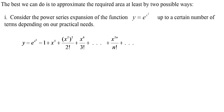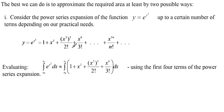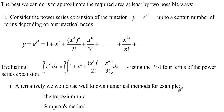Since we cannot determine the area analytically, we must have an alternative way. In our earlier module we resorted to approximating that area using two possible approaches. One is considering the power series of the function, then approximating the integral by evaluating a truncated series — say the first four terms — and integrating term by term using the power rule. The other alternative is to use numerical methods of integration, such as the trapezium rule and Simpson's method. When analytic integration is not possible, we do numerical integration.